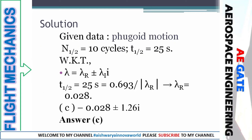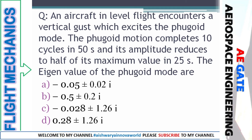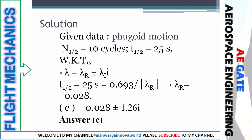First, what is given: number of cycles = 10 in 50 seconds; amplitude reduces to half in 25 seconds (T_half = 25 s). The general characteristic equation is λ = λ_R ± i·λ_I, where λ_R is real and λ_I is imaginary. You must remember the formula: T_half = 0.693 / λ_R. So 25 = 0.693 / λ_R, giving λ_R = 0.028. Checking the answer options, the only option with λ_R = 0.028 is option C.